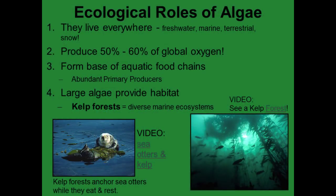What are the ecological roles of algae? Number one, they live everywhere — freshwater, marine, terrestrial, snow — from Antarctica to the Arctic. Two, they produce 50% to 60% of global oxygen. Three, they form the base of aquatic food chains. Since water covers more than 70% of the planet, they are the base of the entire food chain for the earth. They are abundant primary producers.